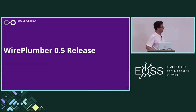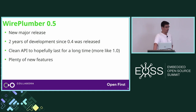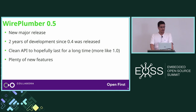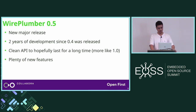Now I'm going to quickly talk about the WirePlumber 0.5 release. It's a new major release — we've been working on it for two years since 0.4, which was actually the first stable release of WirePlumber included in major Linux distributions. This one has a clean API intended to last for a long time, so it's more like a 1.0 release. The API shouldn't change too much going forward, and it has plenty of new features.